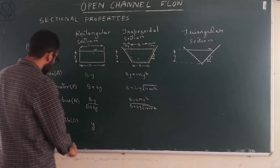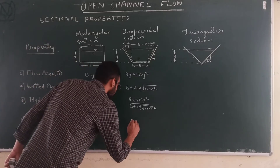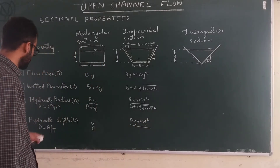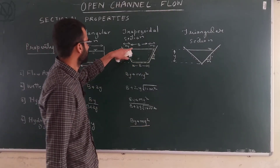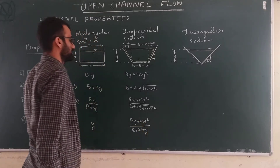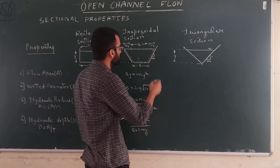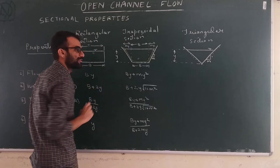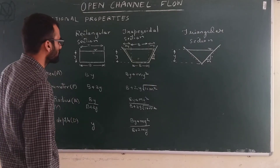The hydraulic depth for a trapezoidal section is D = A/T. The flow area is BY + MY², and the top width T = B + 2MY. So hydraulic depth D = (BY + MY²) / (B + 2MY). If you encounter different side slopes on each side, calculate each triangle's area separately and proceed similarly for the wetted perimeter.